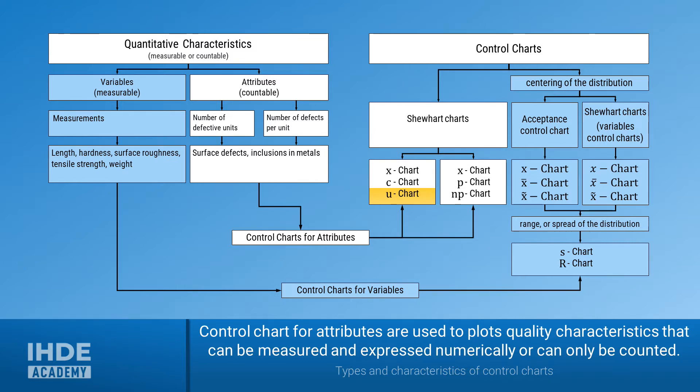Examples of this would be the length, hardness, weight, surface roughness or tensile strength of a component. But we don't want to go into detail about them here. Second, there are the attributive characteristics. Those are all characteristics that can only be counted.